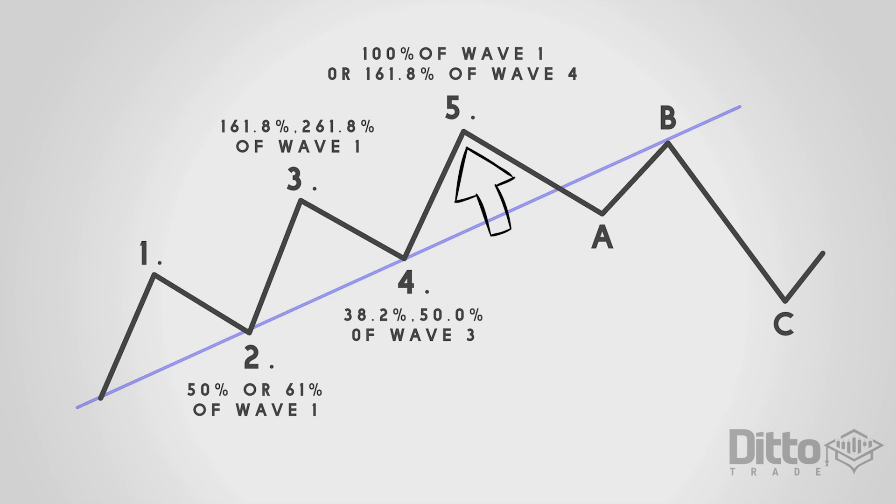Wave five is the last phase in the direction of the now dominant trend. News is almost universally positive and bullish outlook is almost universal. Volume is often lower in wave five than wave three and we begin to see divergence on momentum indicators. Despite market participants still entering buys, the move is now complete and the correction wave is anticipated.